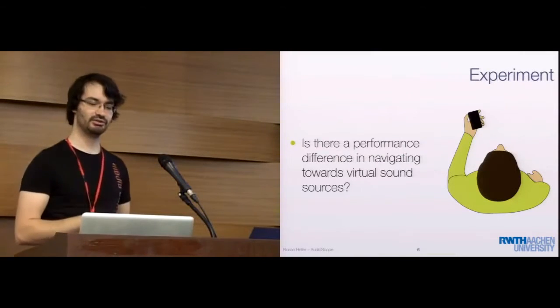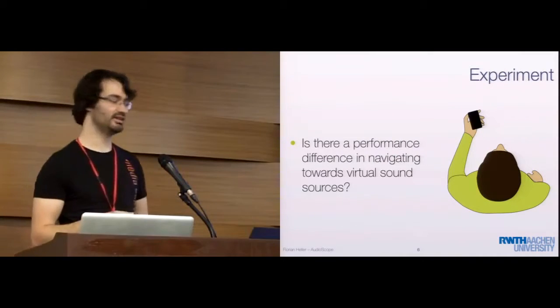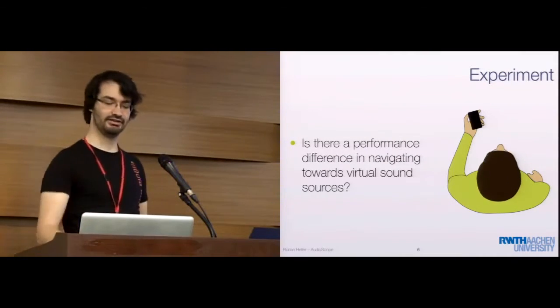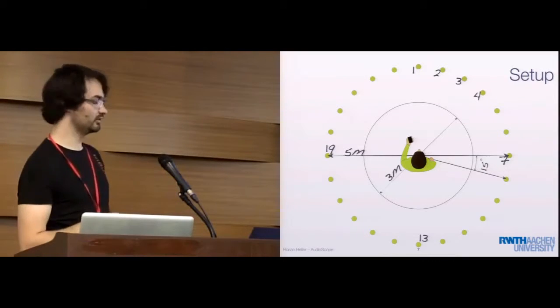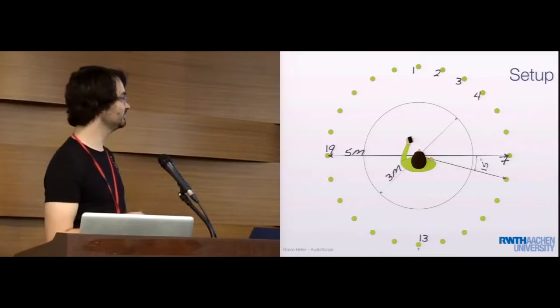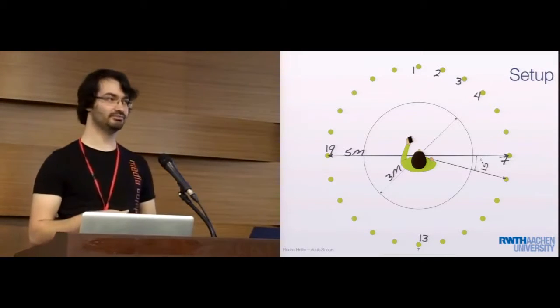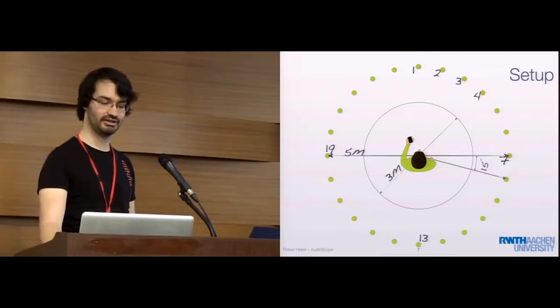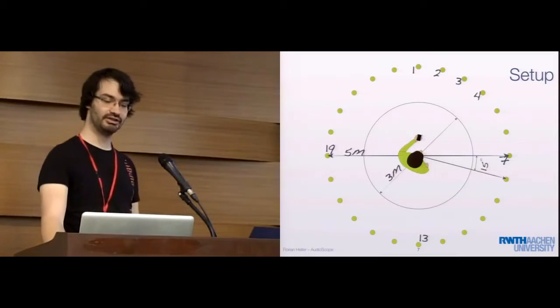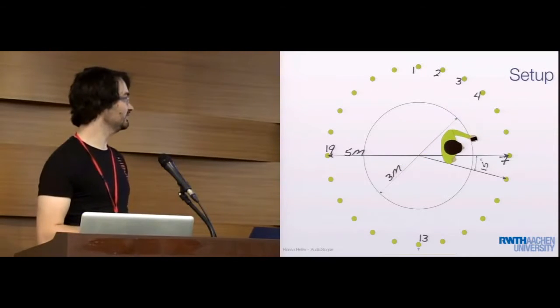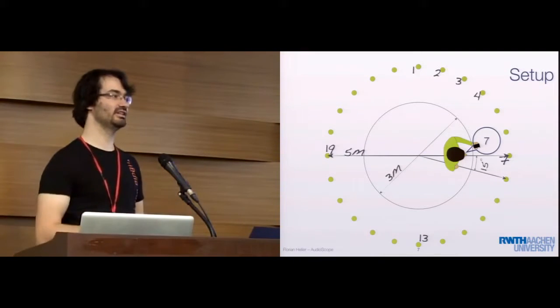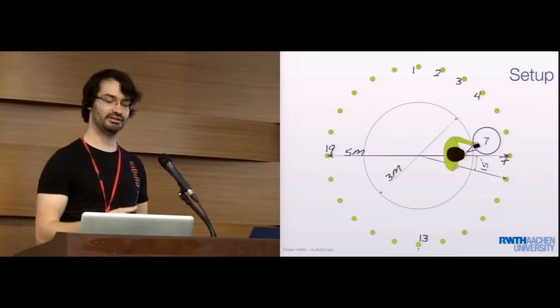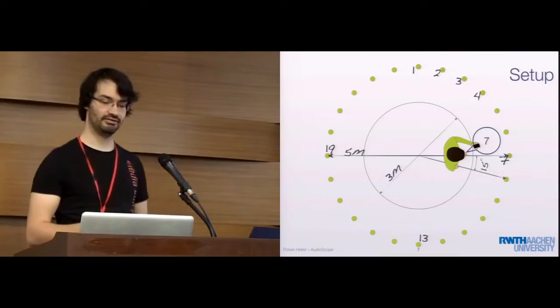We conducted an experiment to find out if there is a performance difference in navigating towards virtual sound sources, either using head orientation or device orientation. We set up 24 virtual sound sources in a circle of a five meter diameter. The sources are spaced by 15 degrees. The participants had to start every trial facing source number one, being at the center of the circle. Then a source started playing, and they had to find the correct source and name it. To account for a more realistic setting, like in a museum, where you're not allowed to go directly to the exhibits, which might be represented by a virtual sound source, we restricted the movements to the inner circle of three meter diameter.